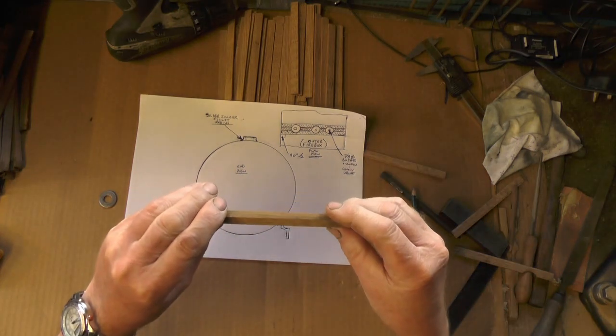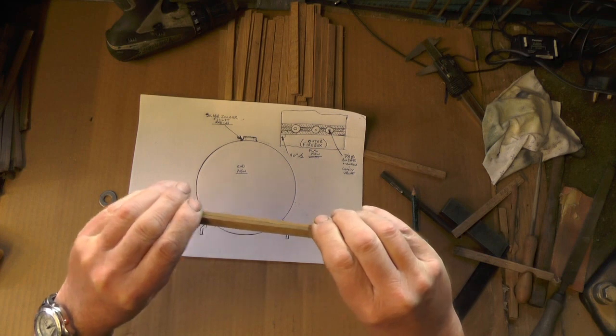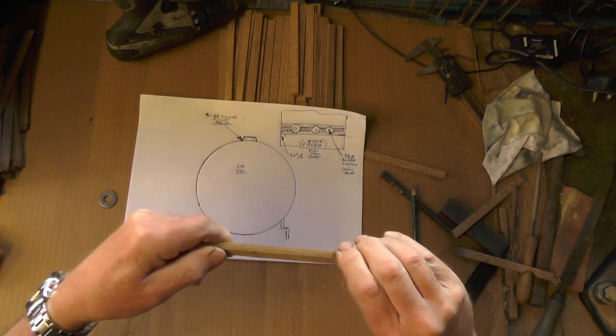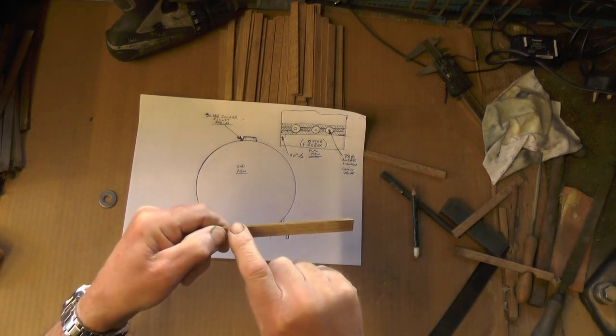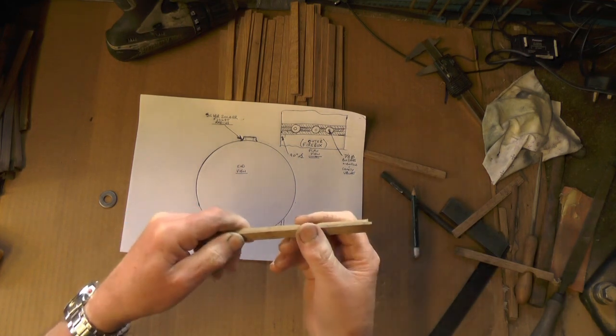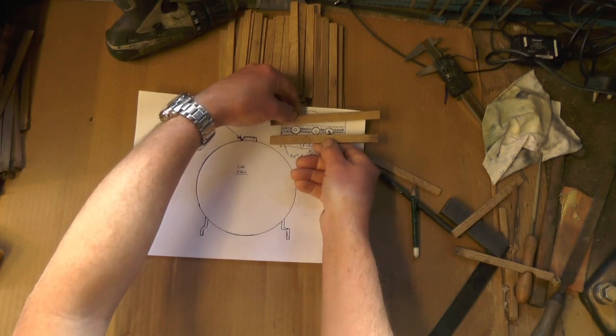I'm going to put two pieces of cladding together, exactly aligned, and I'm going to cut them radiuses in so I get a mirror image. That will give me a nice fit then.